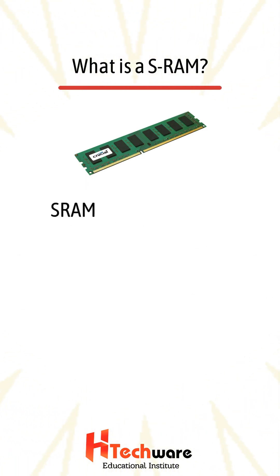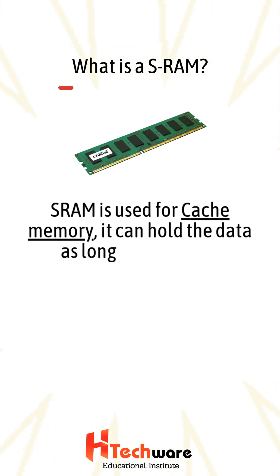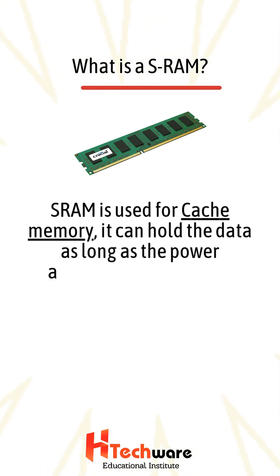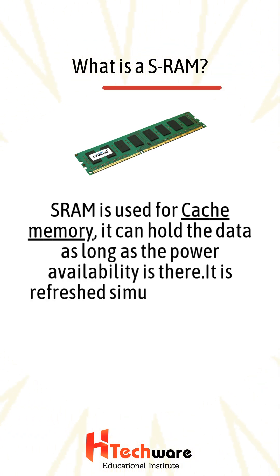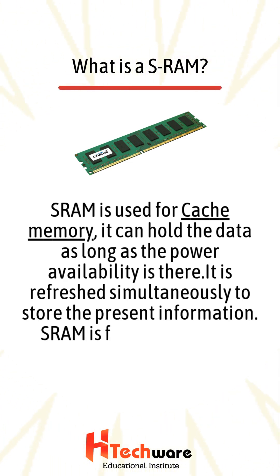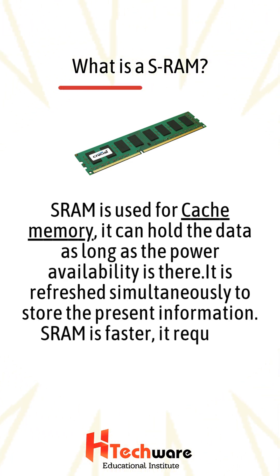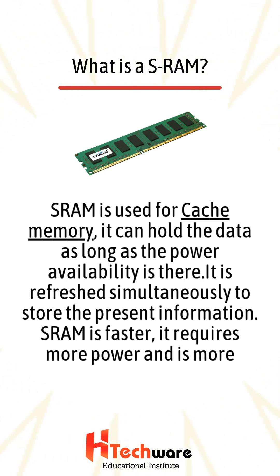What is SRAM? SRAM is used for cache memory. It can hold the data as long as the power availability is there. It is refreshed simultaneously to store the present information. SRAM is faster, it requires more power, and is more expensive.